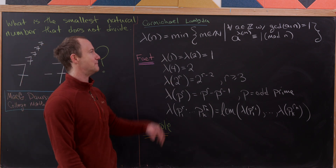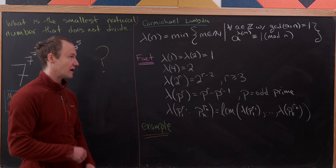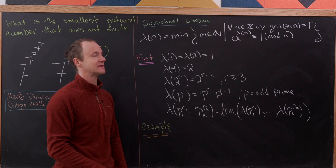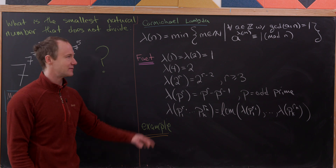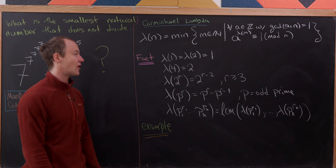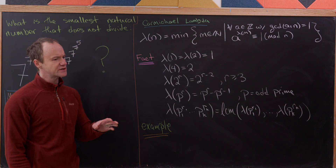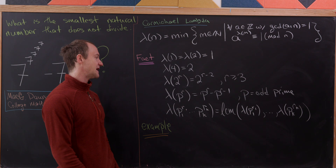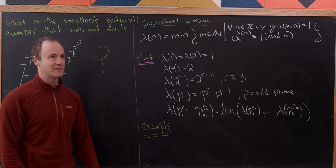Lambda of n is defined to be the minimum of the following set: all natural numbers m where a to the m is congruent to 1 mod n, for all integers a relatively prime to n. Here are some key values: lambda of 1 and lambda of 2 are both 1; lambda of 4 is 2; lambda of 2 to the r is 2 to the r minus 2 for r ≥ 3; and lambda of p to the r is p to the r minus p to the r minus 1 for odd primes p.